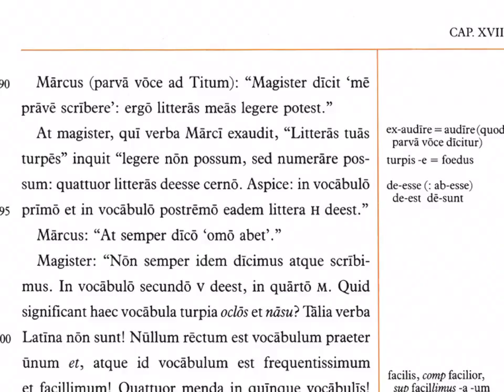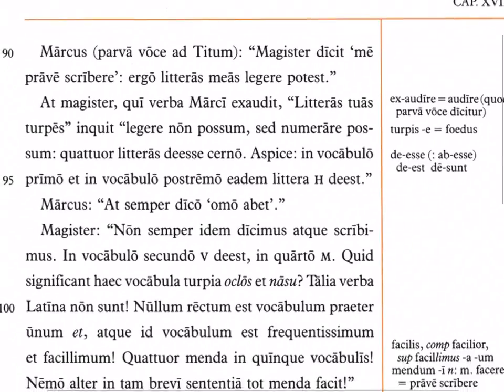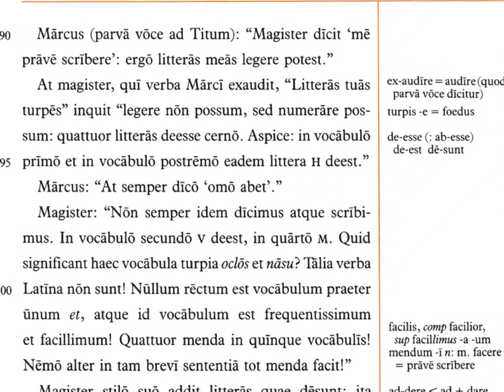Marcus says 'at semper dico homo habet' — but I always say 'homo habet,' writing 'homo' without the H and 'habet' without the H. The teacher then says 'non semper idem dicimus atque scribimus' — we do not always say and write the same thing. In the second word the U or V is missing.